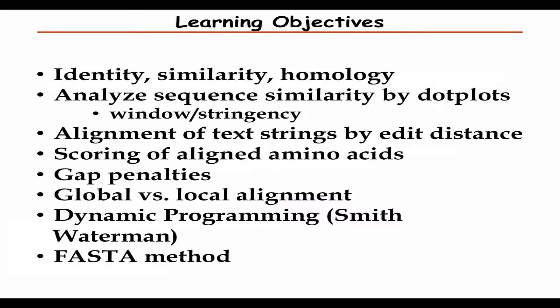The concepts I want to cover today: identity, similarity, and homology — how to understand the differences and not misuse those terms. I'm going to go over dot plots in pretty good detail, so there may be homework and exam questions on that. Also alignments of text strings by edit distance, scoring of alignments for amino acids and DNA, what gap penalties mean, definition of global versus local alignment, the dynamic programming algorithm usually called Smith-Waterman, and a little bit on FASTA.